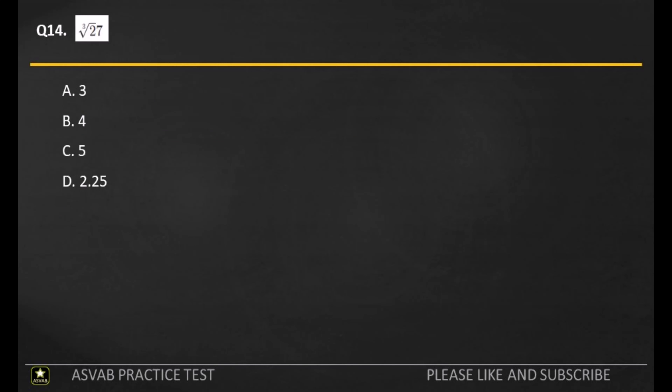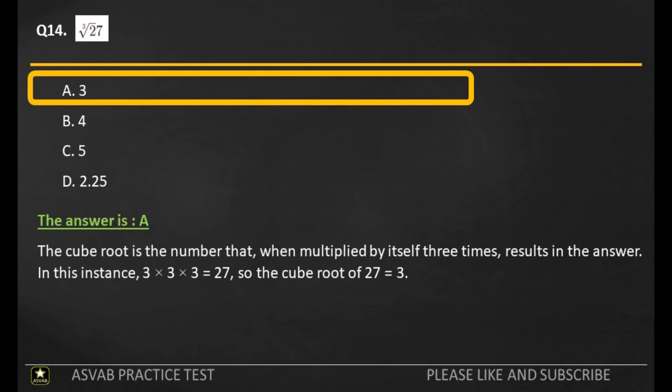Q14. A: 3. B: 4. C: 5. D: 2.25. The answer is A. The cube root is the number that, when multiplied by itself three times, results in the answer. In this instance, three times three times three equals twenty-seven, so the cube root of twenty-seven equals three.